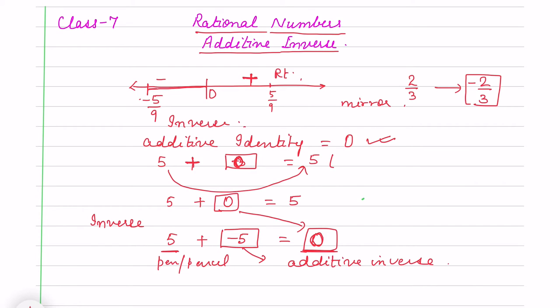When we have to write the additive inverse of any number, what do we do? In a number, there are two things: the sign and the number itself. In additive inverse, we change the sign of the number.